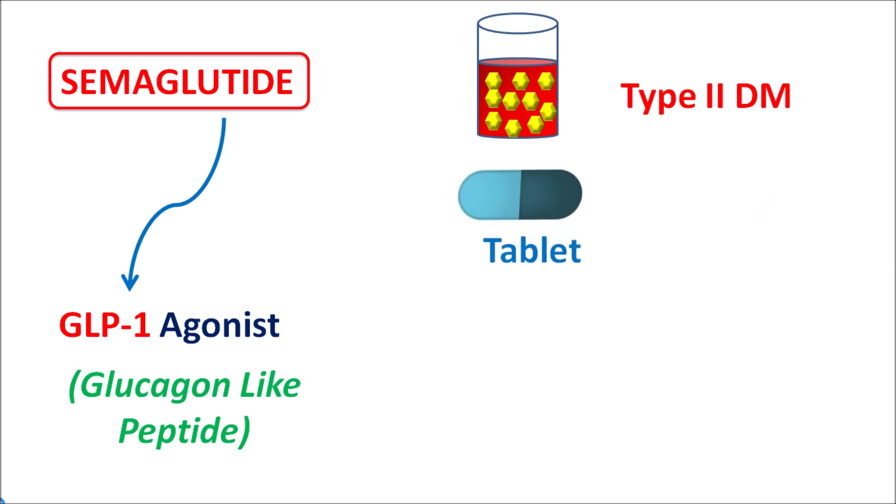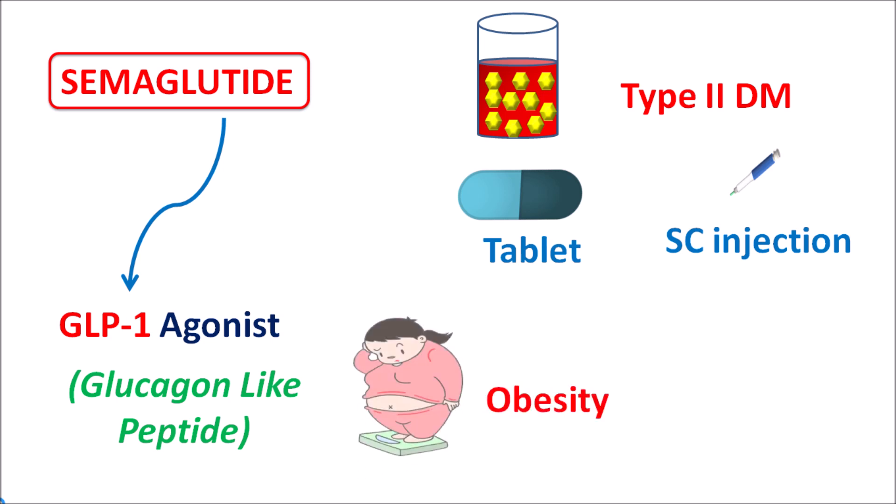Semaglutide can be used in the management of type 2 diabetes mellitus along with diet and exercise. It is available as a tablet as well as a subcutaneous injection. Semaglutide not only reduces glucose levels but also reduces appetite, thereby reducing body weight. That is why it can be used in the management of obesity in patients with a body mass index greater than 30 kg per square meter.